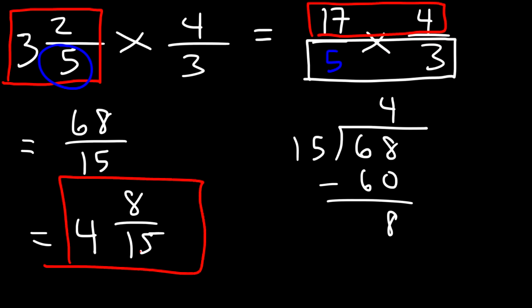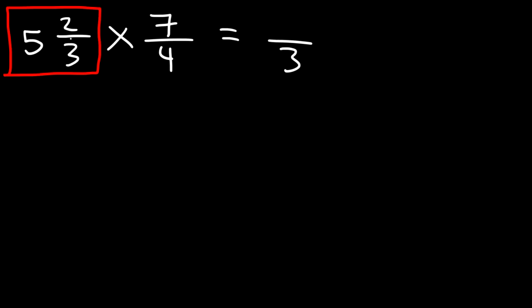So this is the final answer for the problem. Now let's work on another example: let's take the mixed number 5 and 2/3 and multiply it by 7/4. Let's begin by converting the mixed number into an improper fraction. We're going to multiply 5 times 3 and that's going to give us 15 plus 2, so that's going to be 17.